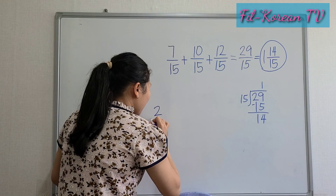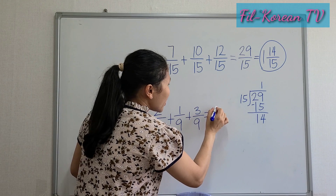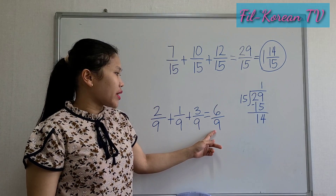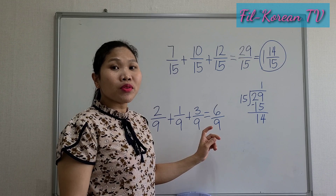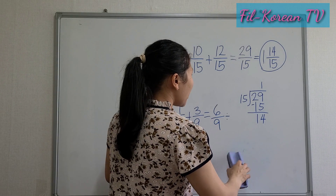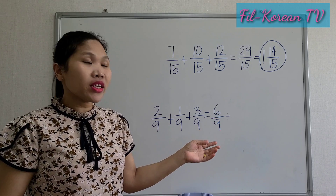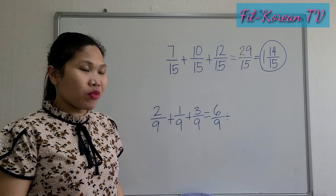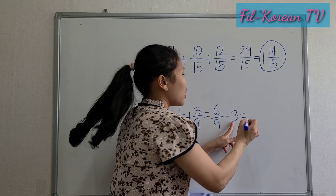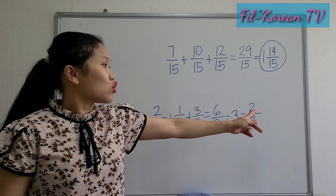Last example — very easy. Add the numerators: two plus one plus three equals six. Copy the common denominator: nine. The answer is six-ninths. Six and nine have a common factor, so we reduce to lowest term by dividing by their GCF, which is three. Six divided by three equals two; nine divided by three equals three. The answer is two-thirds.